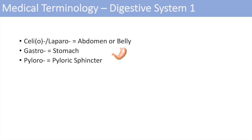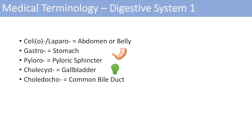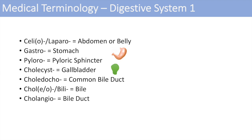Pylaro — the pyloric sphincter is where chyle from the stomach passes first from the stomach into the duodenum. The next term is cholecyst, standing for the gallbladder — cholecystitis is inflammation of the gallbladder. Cholydocho stands for the common bile duct. Choly, choleo, or bili denotes bile — think of bilirubin. Cholangio stands for the bile duct itself — cholangiitis is inflammation of the bile duct.